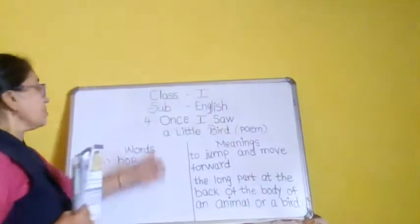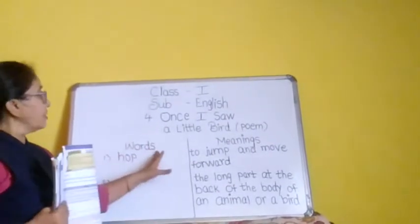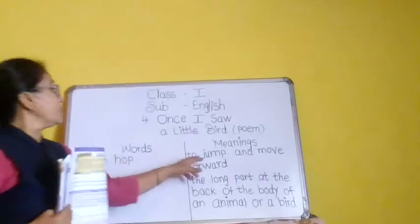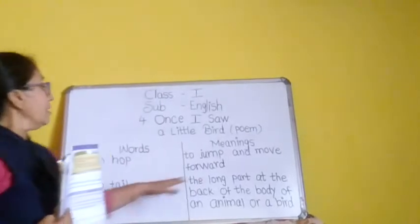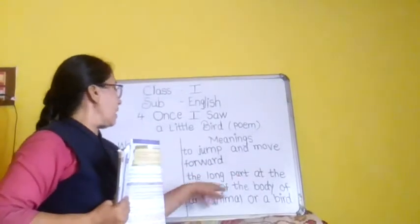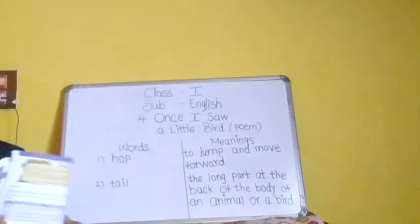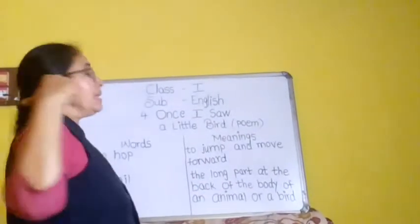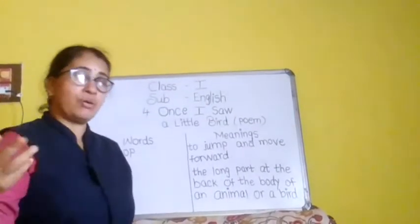I'm going to explain you the words and meanings of this poem. Words meanings: hop, to jump and move forward. Tail, the long part at the back of the body of an animal or bird. Tail means the back part of the body of animals or birds, that is called tail.